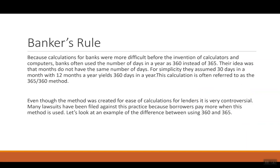One thing we want to talk about as we go on is the banker's rule. Because calculations for banks were more difficult before the invention of calculators and computers, banks often use the number of days in a year as 360 instead of 365. Their idea was that months don't have the same number of days. So for simplicity, they assumed 30 days in a month with 12 months in a year, and that gave them 360 days in a year. This calculation is often referred to as the 365 over 360 method. Even though the method was created for ease of calculation for lenders, it is very controversial. Many lawsuits have been filed against this practice because borrowers pay more when this method is used.